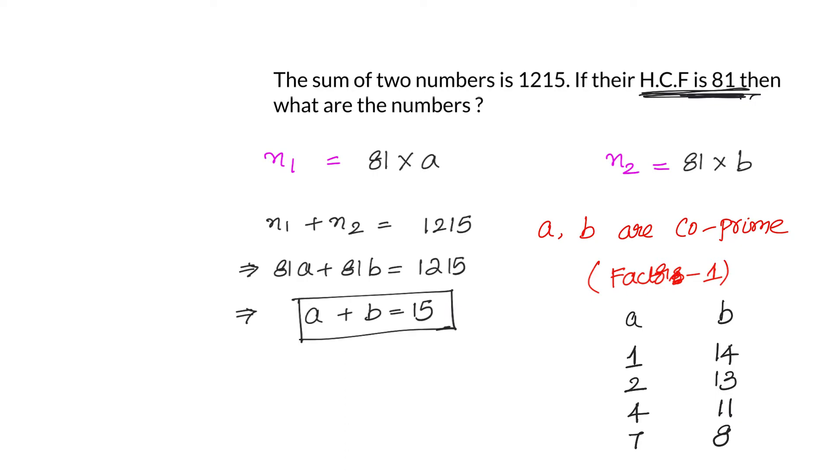So now we can go back and write down the numbers. n1 and n2. Now for the first scenario we have 81 into a. So n1 is 81. So n2 is 81 into 14, so that is 1134.